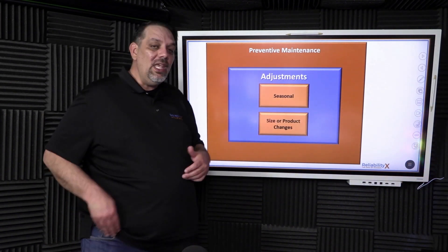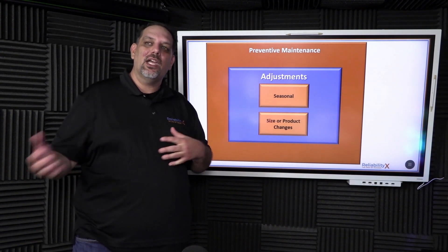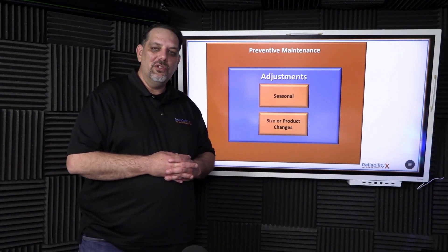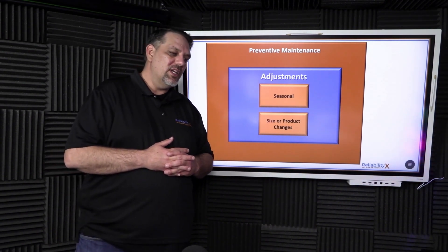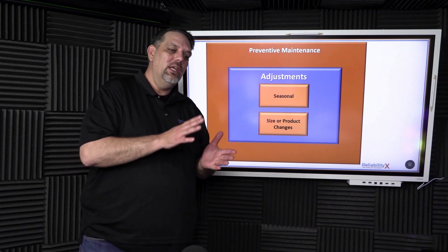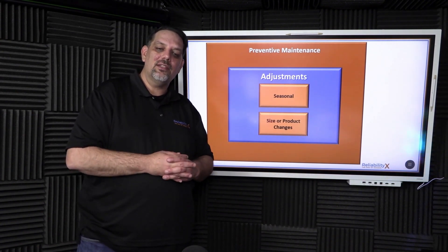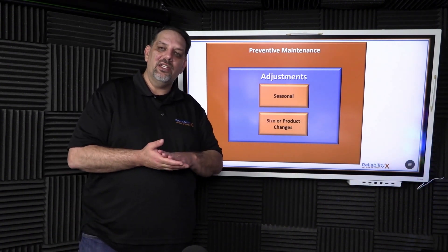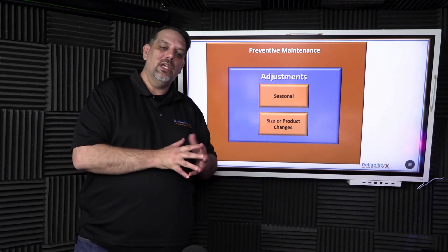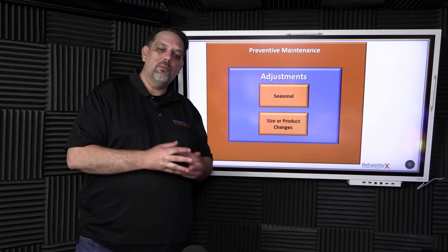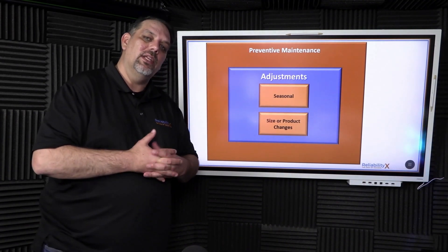Next is adjustments. And so adjustments, this isn't because I got called to a machine to make an adjustment due to a lack of operator training or a lack of center lines. This is more adjustments, whether it's seasonal. So it could be switching crack heater units from winter to summer. That would be an adjustment PM. It's a seasonal task or say a size or product changes. Those things that maintenance does during a changeover. That's where we're looking for feedback. Let's see what fits under this PM type and see if we can't define it better.